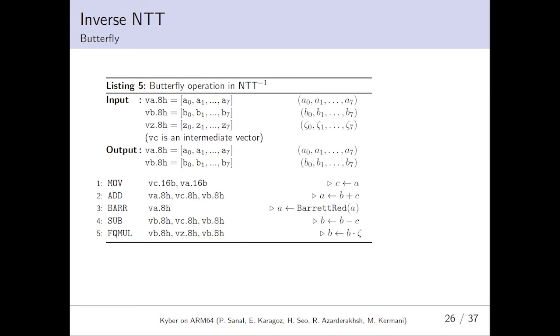Inverse NTT. Vice versa, a vector in NTT domain can also be transformed to the normal domain by using butterfly operations. Different than butterfly operation in forward NTT, it also uses Barrett reduction.